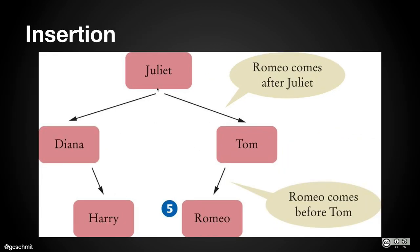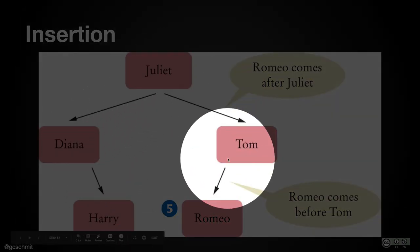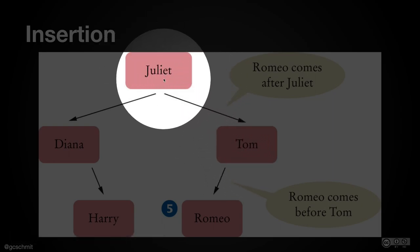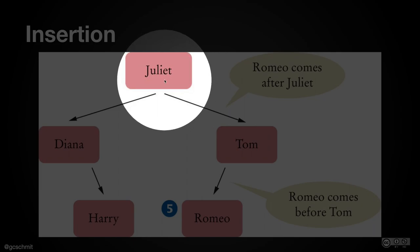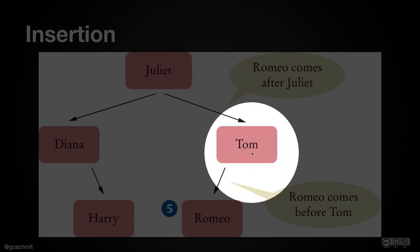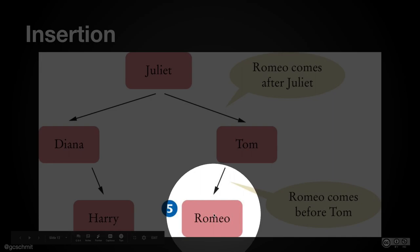For insertion: assuming we have a tree with Harry, Diana, Juliet, and Tom, and we want to insert Romeo — we start at the root and compare Romeo to Juliet. Romeo comes after Juliet, so we follow the right branch. We compare Romeo to Tom: Romeo comes before Tom, so we follow the left branch. If there is no left branch to follow, that's where we insert the node.